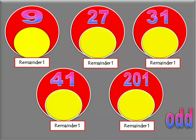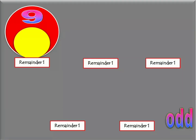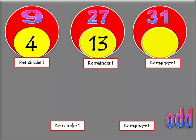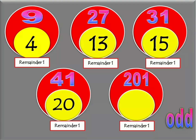Now let us have another set of numbers. Always remember that these are all odd numbers — they are not exactly divisible by 2. If you divide them by 2, they will have a remainder of 1. If we divide 9 by 2, we get 4 remainder 1. How about 27? It's 13 remainder 1. How about 31? It's 15 remainder 1. 41? It's 20 remainder 1. Lastly, 201? It's 100 remainder 1.